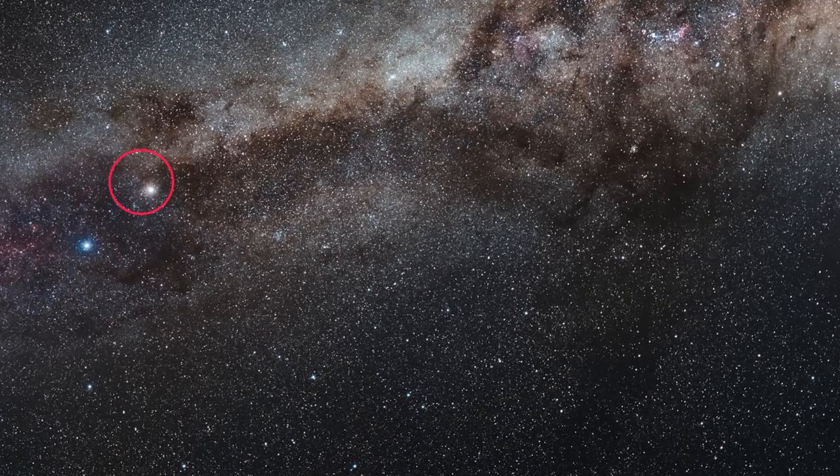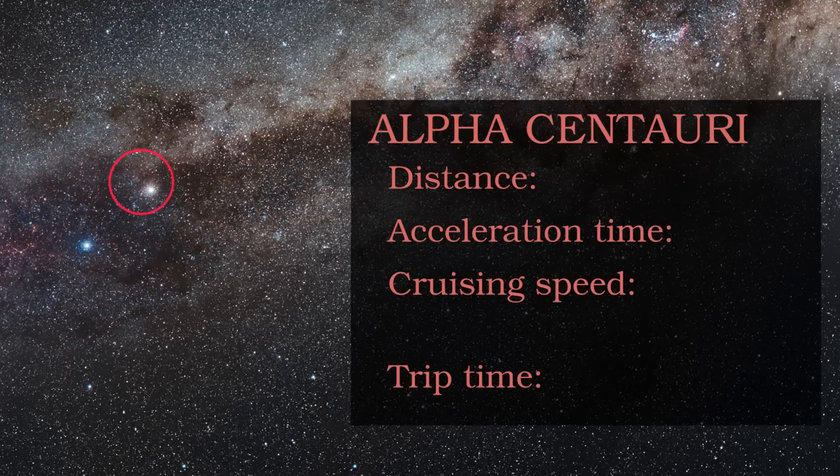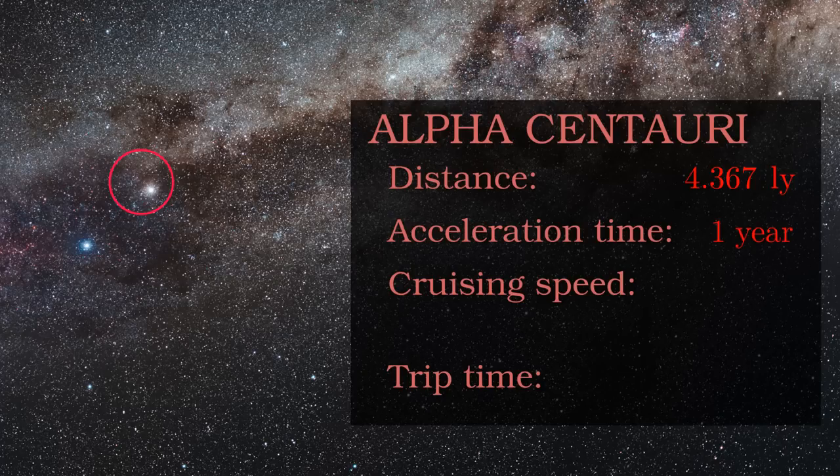The Alpha Centauri system, actually consisting of 3 stars, is the closest to Earth at 4.4 light years. Suppose that a spaceship maintained a rate of acceleration of 1g for an entire year. As a result, the spaceship would be travelling at just over 70% of the speed of light.